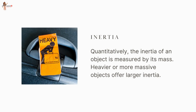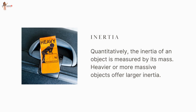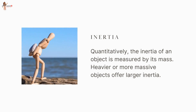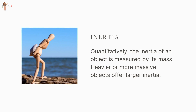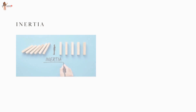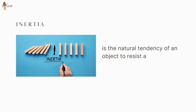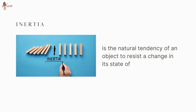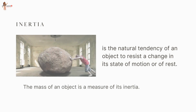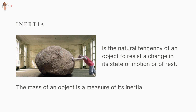Clearly, heavier or more massive objects offer larger inertia. Quantitatively, the inertia of an object is measured by its mass. We may thus relate inertia and mass: inertia is the natural tendency of an object to resist a change in its state of motion or rest. The mass of an object is a measure of its inertia.